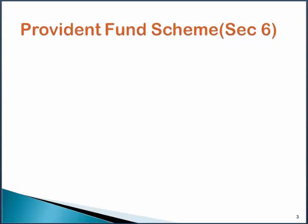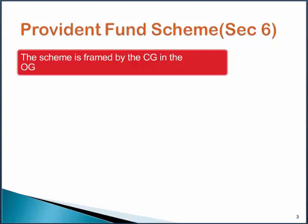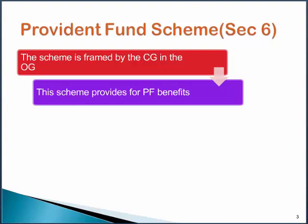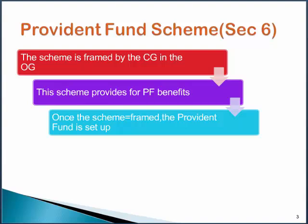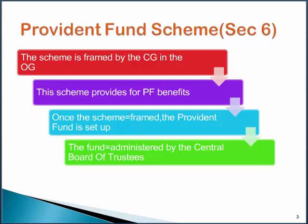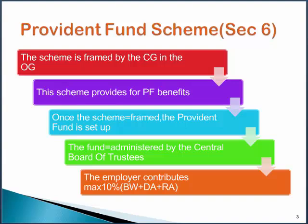Let's consider the most important concept of this chapter. You could get a theory question asking you to explain the Provident Fund Scheme as per Section 6. The entire answer would be completed in six simple points. The scheme has to be framed by the central government in the Official Gazette. The scheme should provide for Provident Fund benefits. Once the scheme is framed, the Provident Fund will be set up. The fund would be administered by the Central Board of Trustees. The employer would contribute maximum 10% of Basic Wages, Dearness Allowance, and Retaining Allowance. The employee would contribute minimum 10% of Basic Wages plus Dearness Allowance plus Retaining Allowance. This scheme would provide for all the matters specified in Schedule 2 of this Act.